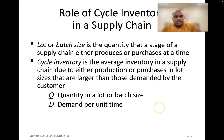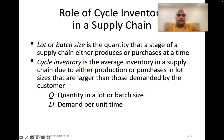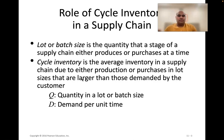Cycle inventory is the average inventory in the supply chain that occurs due to either production or purchases in lot sizes larger than those demanded by the customer. Whether you're ordering from a supplier in batches or manufacturing at a rate faster than you sell, cycle inventory is the average amount of inventory you hold in the system.